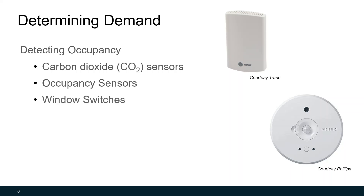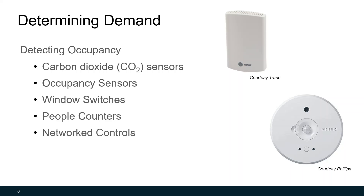There are some other sensors we can use. Window switches are used if you have operable windows — if you want to automatically open your windows when it's suitable outside to naturally ventilate your building, you can use window switches. You can also use people counters, and these come in a number of forms and are somewhat of an emerging technology. These range from infrared scanners to using your security system if you can make it cyber secure — when you badge into a facility, you count the number of people in your building. There's even more emerging technology around network controls; one example is using the Wi-Fi router to detect the number of devices and estimate how many people are in the building or in a space.